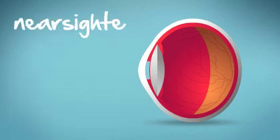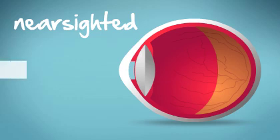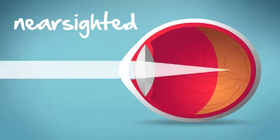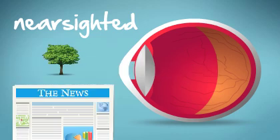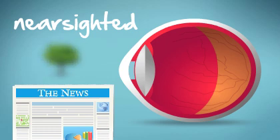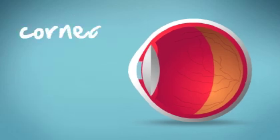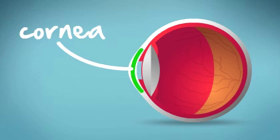But when your eyeball is too long, light rays achieve a point of focus before they can even reach the retina. This means you are nearsighted and objects appear blurred in the distance. Many eyes also have an irregularly shaped cornea,